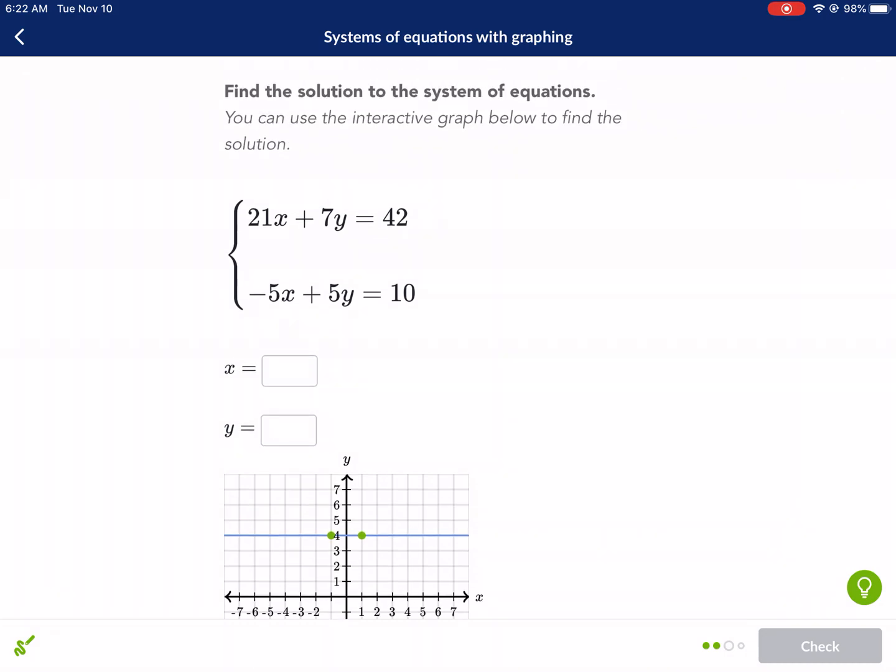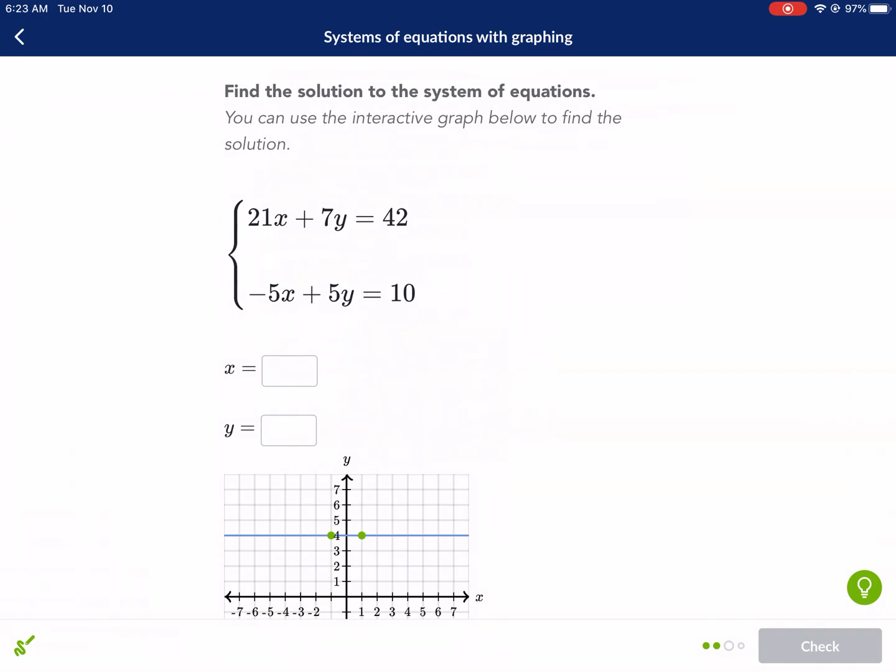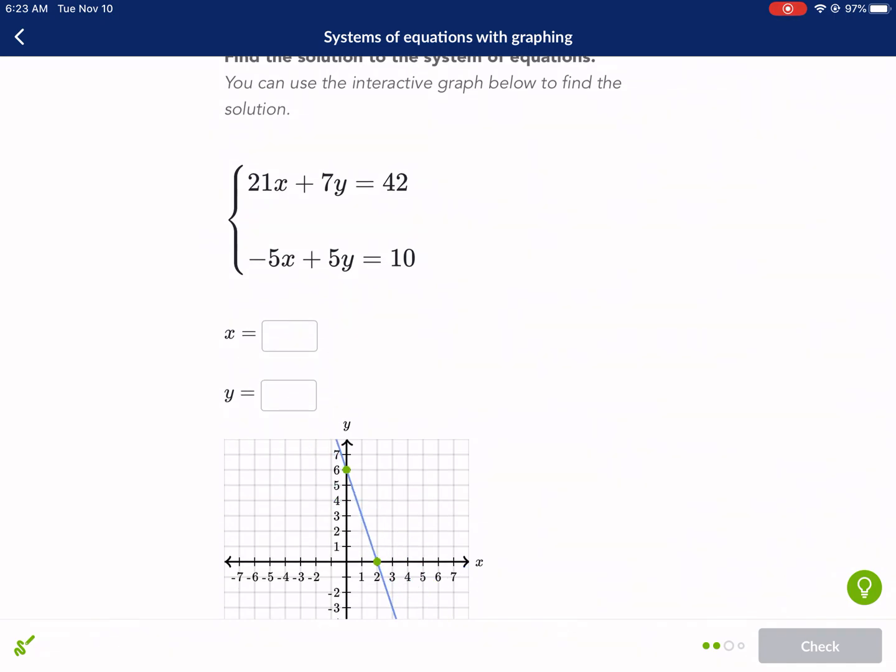Next question. All right another standard form one. So we're going to do the x and y intercepts. Let's make this the blue line. For the y intercept I'm just going to cover up the x. So then I'm going to divide by 7, divide by 7 and I get y equals 6. That's my y intercept. Now I want to find my x intercept so I cover up my y. So then I have divide by 21, divide by 21. I get x equals 2. So x equals 2 and y equals 6. So standard form really isn't that bad. This is a really simple way to graph standard form.